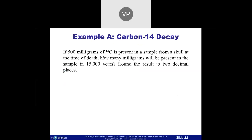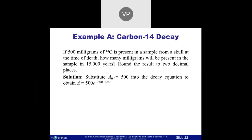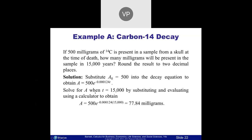We have 500 milligrams of carbon-14. This is how they do carbon dating. How many milligrams will be present in 15,000 years? The starting amount is 500; we put it in. Then take 15,000 and plug it in for t. On a calculator: take 15,000 times -0.000124, hit equals, then hit the e button, then multiply that by 500. We get 77.84 milligrams. So in 15,000 years it went from 500 milligrams down to 77. It'll never get to zero, but keeps getting smaller and smaller.